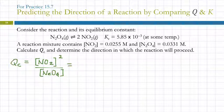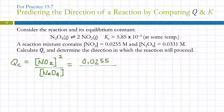And we're going to put in the numbers. NO2 is 0.0255, and that's going to be squared, divided by 0.0331.